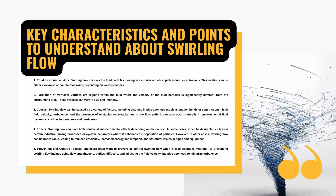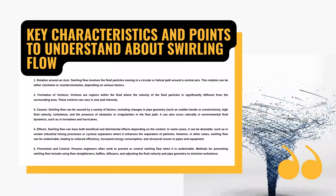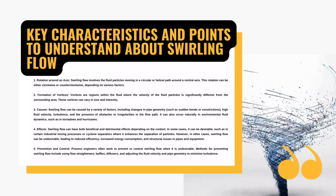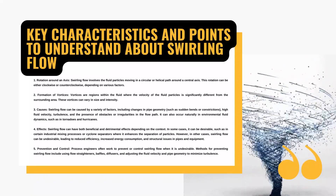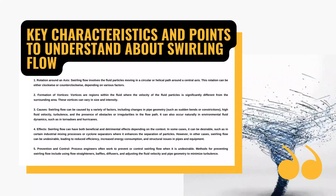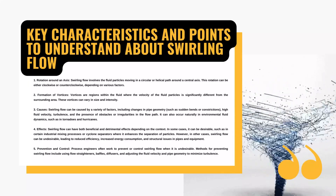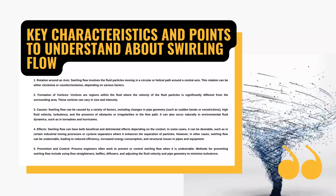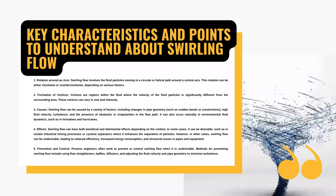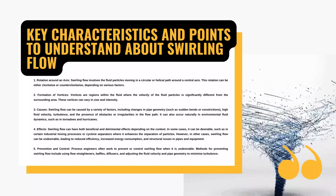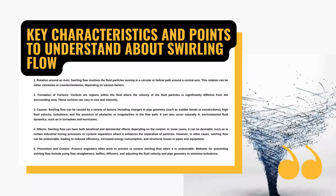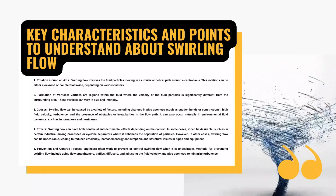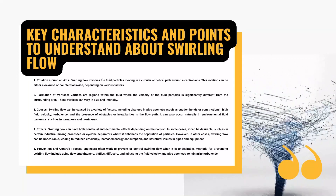Next comes the formation of vortices. Vortices are regions in the fluid where the fluid velocity of the particle is significantly different from the surrounding area — think of them as mini whirlpools or eddies that can vary in size and intensity. Swirling flow can be triggered by various factors such as change in pipe geometry, high fluid velocity, turbulence, or obstacles in the flow path.